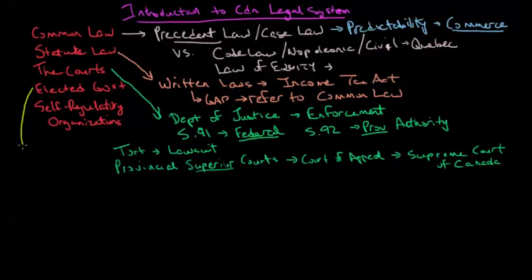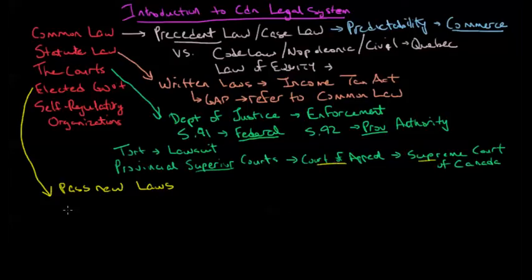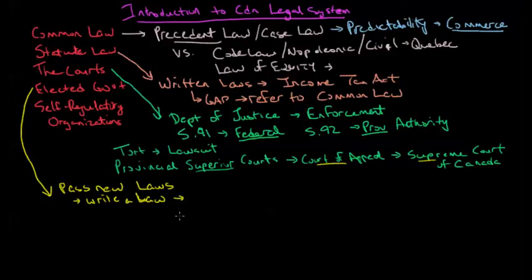The role of elected government is to pass new laws. What will sometimes happen is we may have a case that goes to a provincial court of appeal or all the way to the Supreme Court, and maybe our current government is not happy with that outcome or is somehow compelled to take some role. So they will write a law that creates some clarity where otherwise we'd have to refer to precedent, trying to establish clarity or policy.